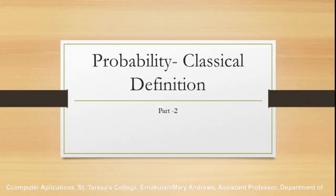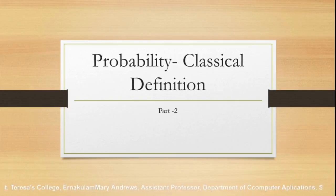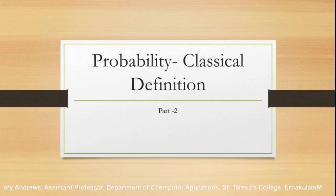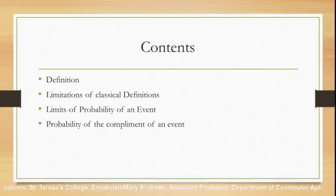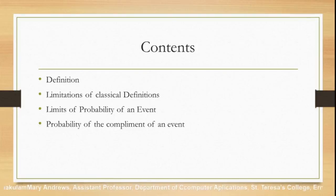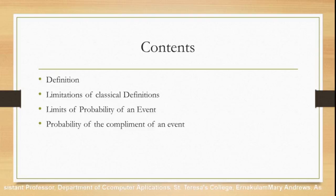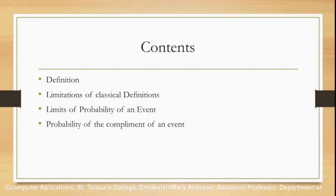Welcome to the second part of probability theory. In this part we will be discussing the classical definition of probability. I hope you have gone through the first video where we discussed the important terminologies connected with probability theory. Today we will deal with the classical definition of probability, its limitations, the limits of probability of an event, and finally the probability of the complement of an event.